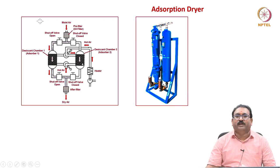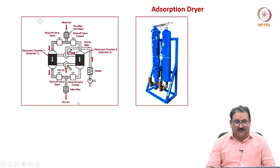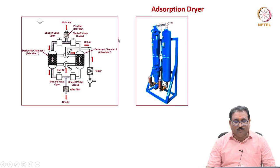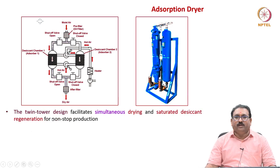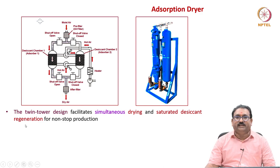One tower is active for drying while the other tower is in regeneration mode. Various filters are there to remove moisture contents. The twin tower design facilitates simultaneous drying and saturated desiccant regeneration for non-stop production. Always either one or the other tower is used for air drying, and the other is used for regeneration.